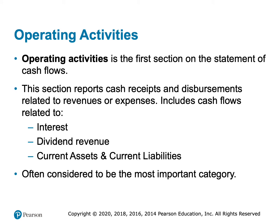The operating section is the first section listed. This reports the cash receipts from anything related to the income statement — revenues, expenses, interest (whether that's interest revenue or interest expense), and dividend revenue. Let me be very clear: dividend revenue is not dividends that we are paying. This is when we own stock in another company and they pay us dividends. That would show up in our income statement under other revenues and gains, as well as current assets and current liabilities. So anything that appears on the income statement is going to show up in the operating activities section.